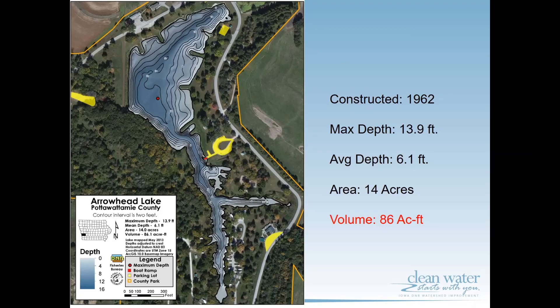Here is the bathymetric map of Arrowhead Pond, which shows the various depths — contours at two-foot, six-foot, and so on. A few quick stats: Arrowhead Pond was constructed in 1962. Its maximum depth is around 14 feet, and the average depth is about 6.1 feet. The area is about 14 acres, which is fairly small for Iowa lakes. It is man-made — you can see the dissected arms typical of man-made lakes in Iowa — with a volume of 86 acre-feet.